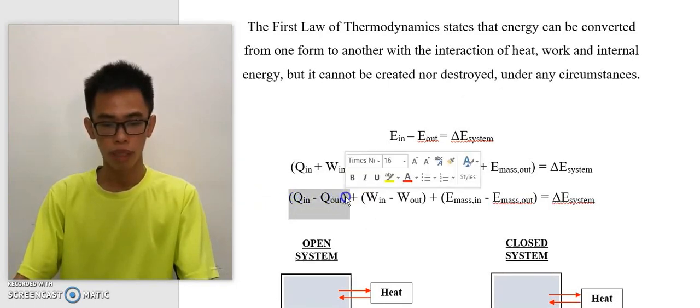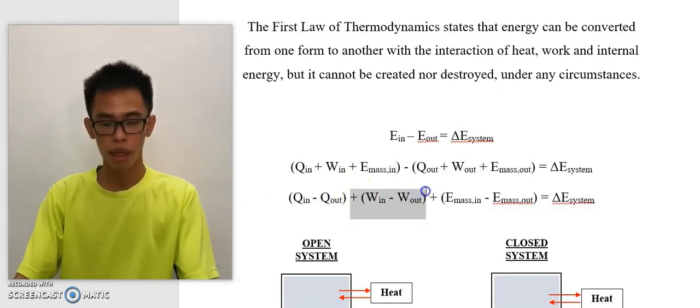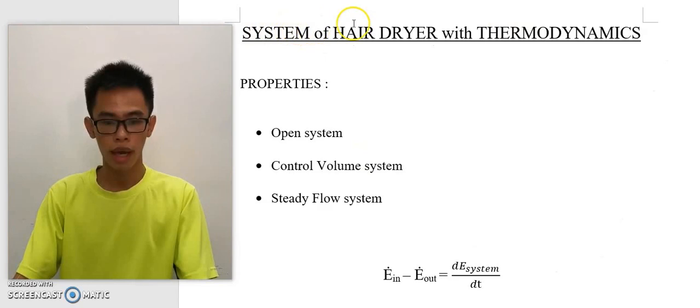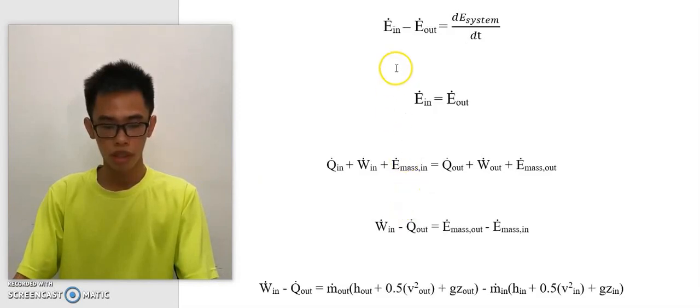Energy can be transformed into three forms: heat, work, and mass flow. From the first law of thermodynamics, the properties of the hair dryer system are open system, control volume system, and steady flow system. From the definition and consideration of time, we have this equation. Due to the steady flow system, delta E_system over delta T is equal to zero. Thus, we have dot E_in equal to dot E_out.